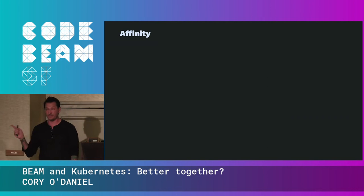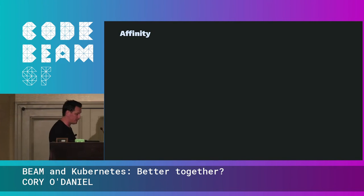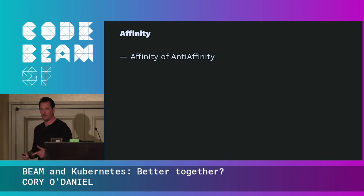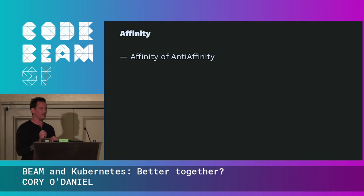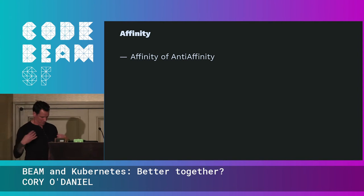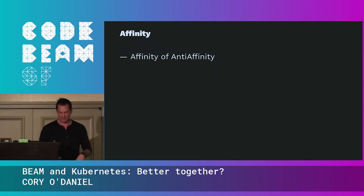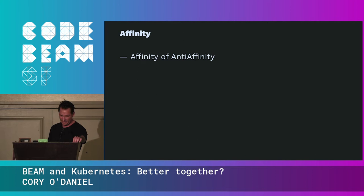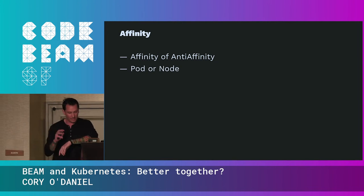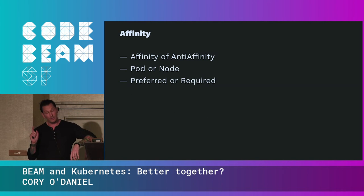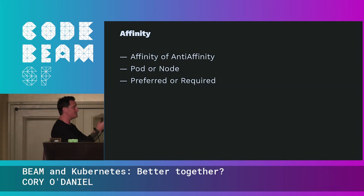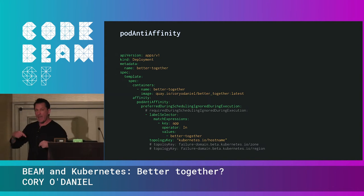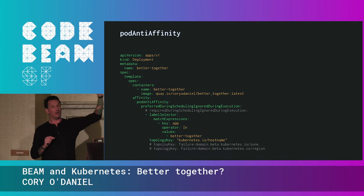Affinity is super complicated with a lot of facets. We have affinity and anti-affinity — affinity is telling Kubernetes how you feel about nodes and other pods: do you want to be near them or away from them? There are pods or nodes as the other facet, and whether your affinity is preferred or required. We're going to look at pod anti-affinity with preference — meaning my application prefers not to be on a node with another pod of the same type.